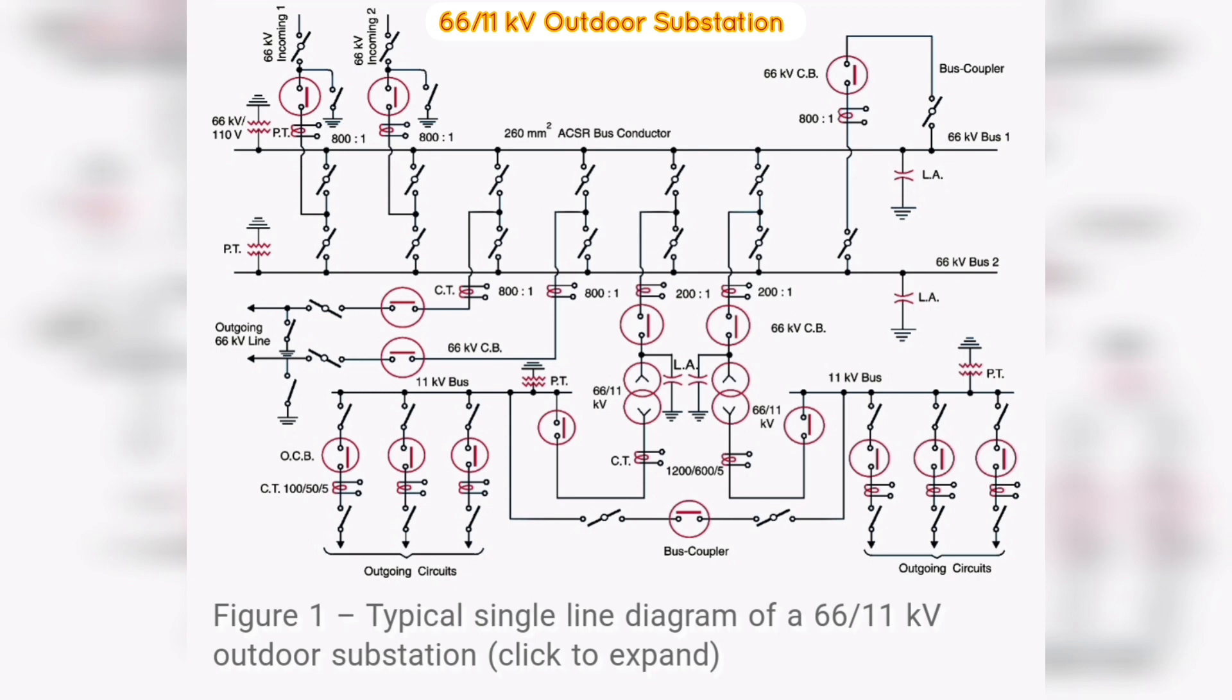The incoming lines can be connected to either bus bar with the help of a bus coupler, which consists of a circuit breaker and isolators. The advantage of the double bus bar system is that if repair is to be carried on one bus bar, the supply need not be interrupted as the entire load can be transferred to the other bus.